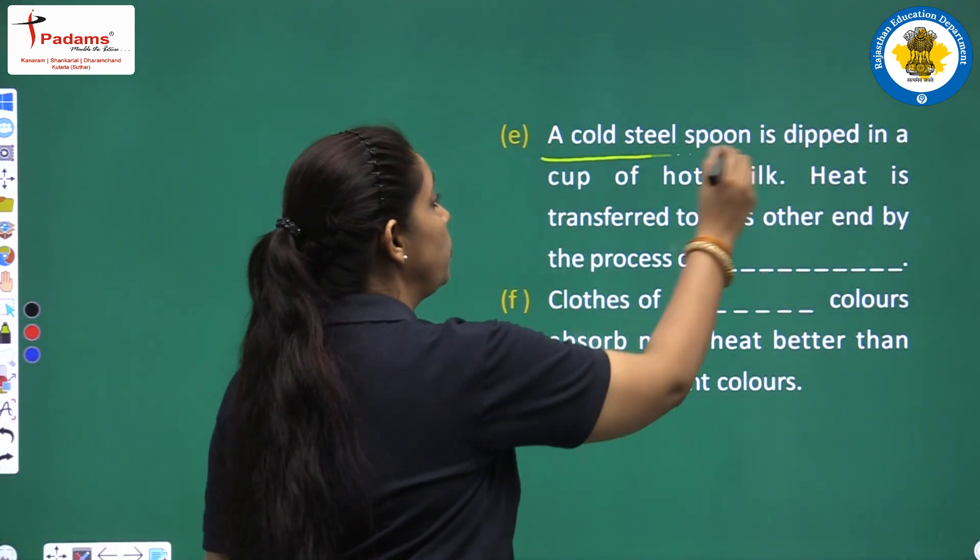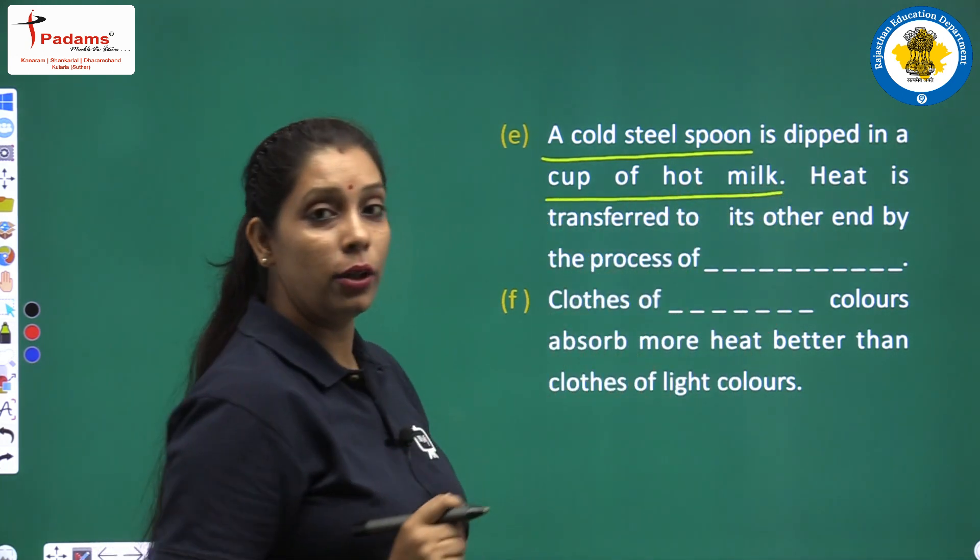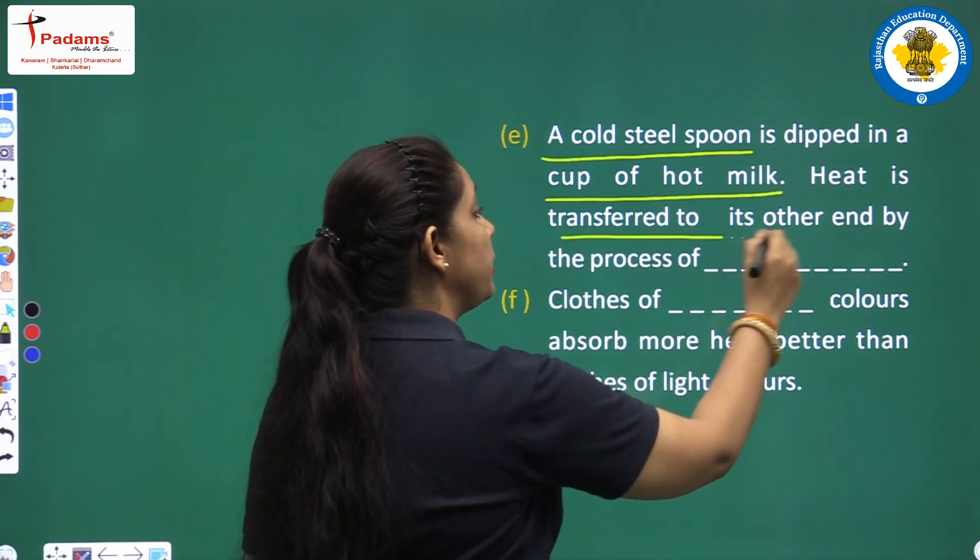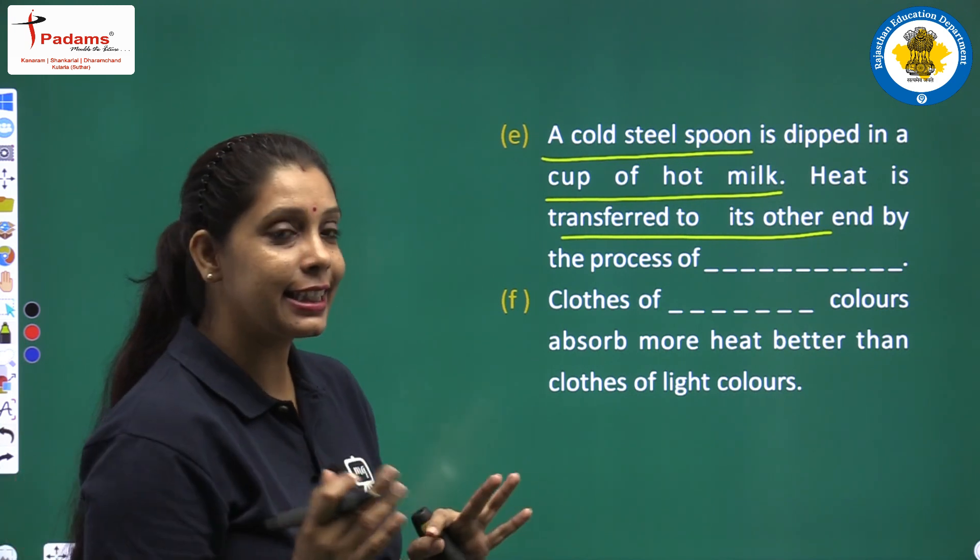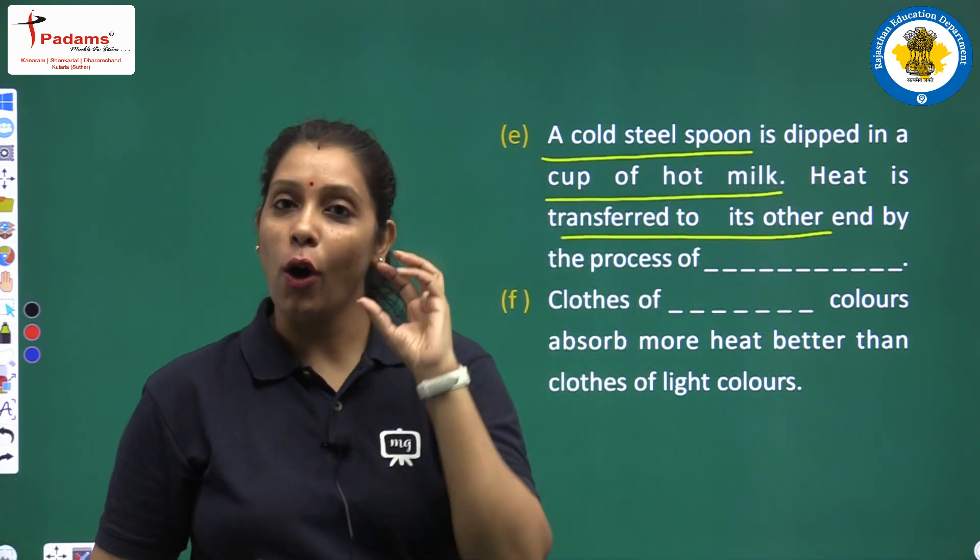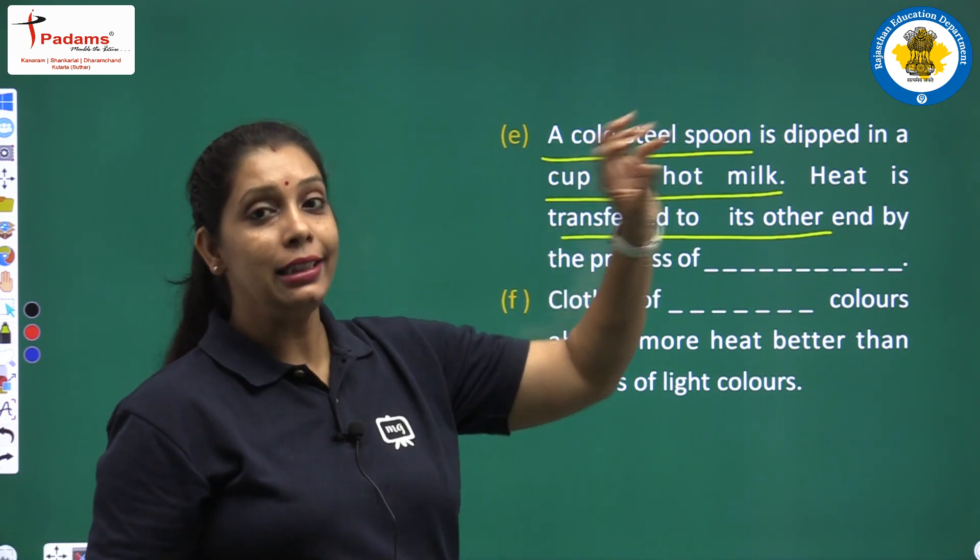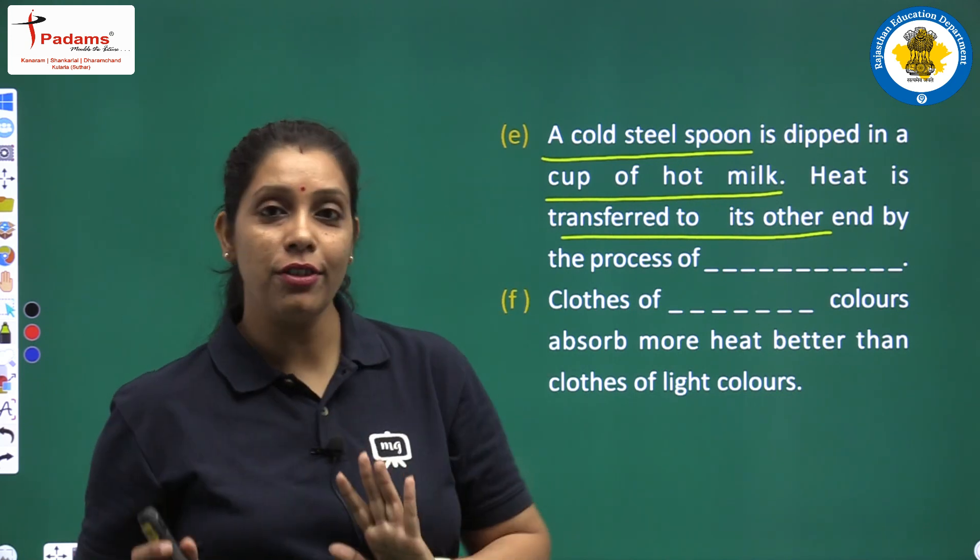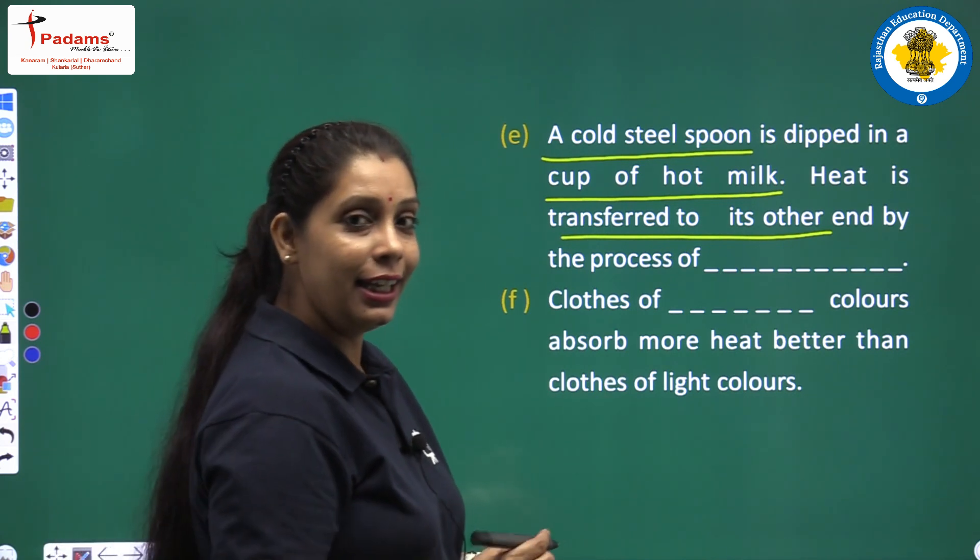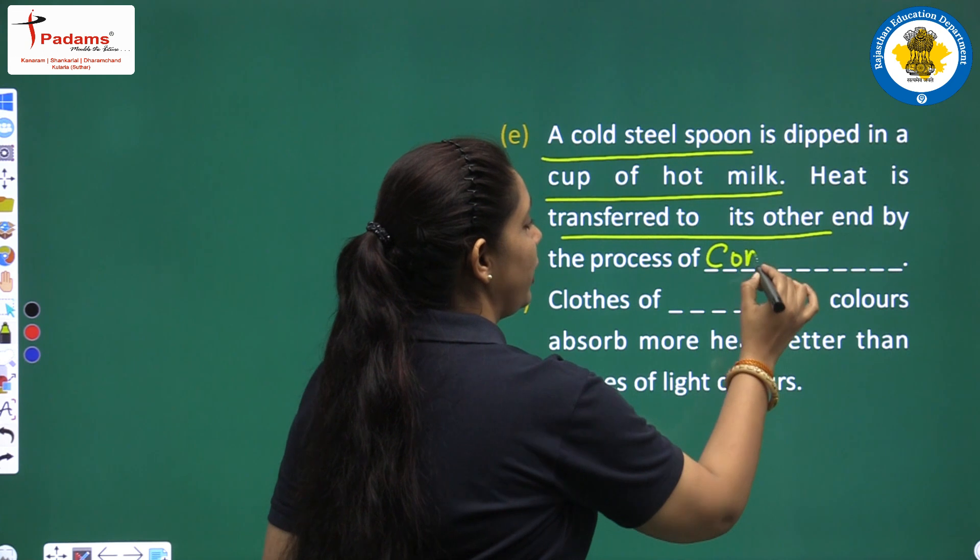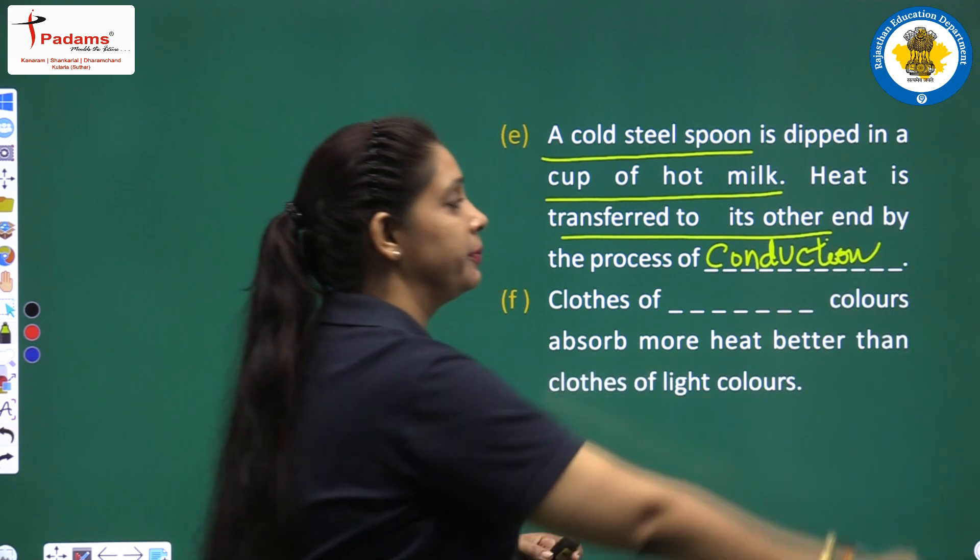Question: A cold steel spoon is dipped in a cup of hot milk. Heat is transferred to its other end by the process of conduction. We have a hot cup of milk in which we dipped a cold steel spoon. The heat transfer will be by which process? It is by conduction. Write down conduction.